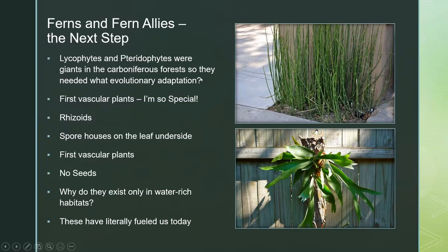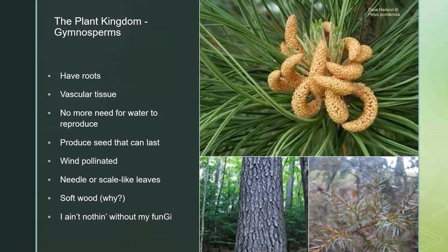Ferns and pteridophytes from the carboniferous period are basically what fuel is today — that's where our petroleum comes from. The gymnosperms are the non-flowering plants: totally rooted, have seeds, have vascular tissue, but don't have fancy flowers because they're wind pollinated. These are your spruce, pines, cycads, and ginkgo.